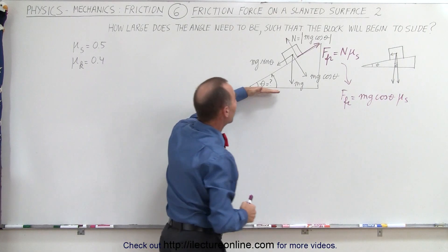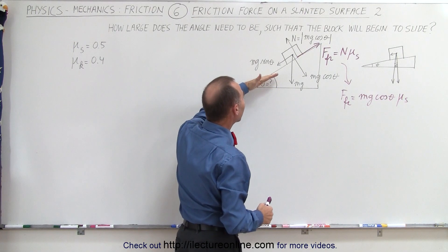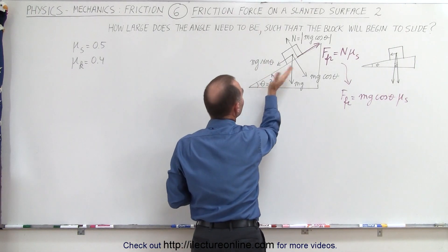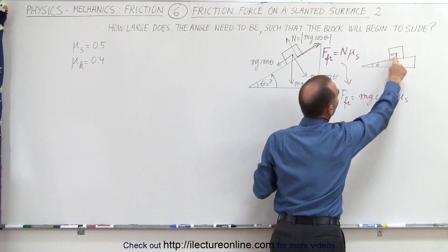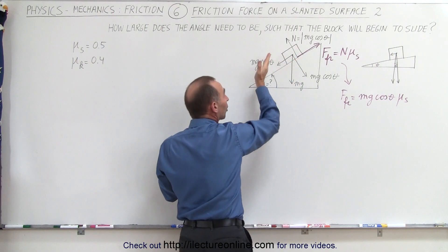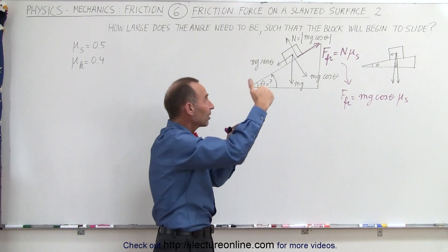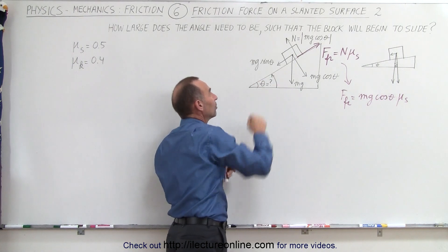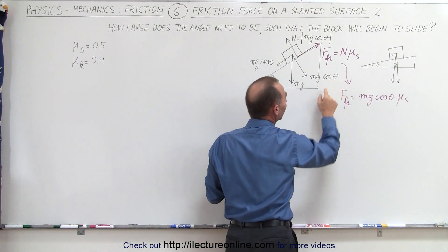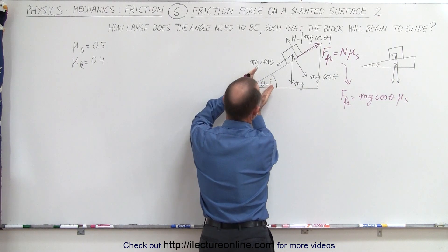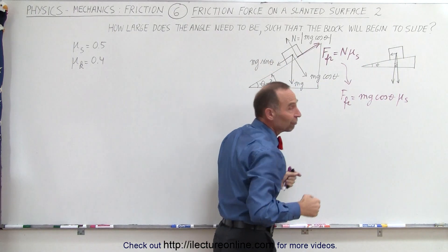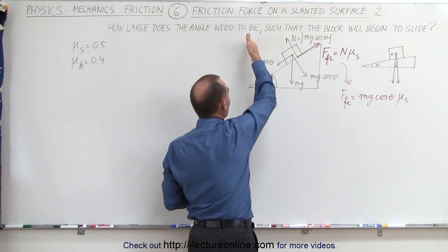Now, what we're going to do is increase the angle of the incline until the block begins to slide. So we're going to be increasing the mg sine theta. Notice, if the angle is small, the mg sine theta component is very small. But as the angle increases, the mg sine theta component gets larger and larger. So the force trying to pull the object down the incline gets larger as the angle increases. At the same time, the friction force gets smaller because it is a function of the cosine of the angle. And the cosine of the angle gets smaller as the angle gets bigger. At the limit, as the angle is 90 degrees, the cosine of 90 is zero, and there's no longer any friction force between the object and the surface. Then the block would simply be in free fall.